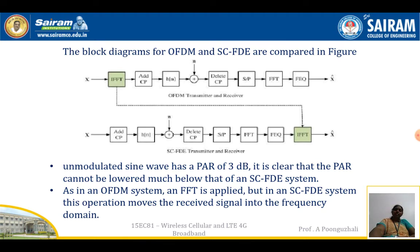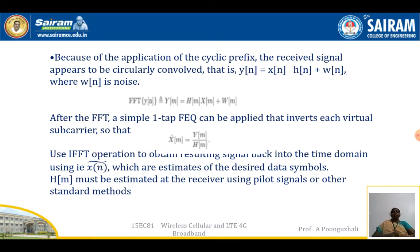From the frequency equalizer, the signal is given to an IFFT block, where the output is a time domain signal. Because of the application of the cyclic prefix, the received signal appears as a circularly convolved signal: Y(N) = X(N) circular convolution H(N) + W(N), where W(N) is the noise present in the channel. Taking the FFT of Y(N) gives the frequency domain representation: Y(N) = X(N) · H(N) + W(N).